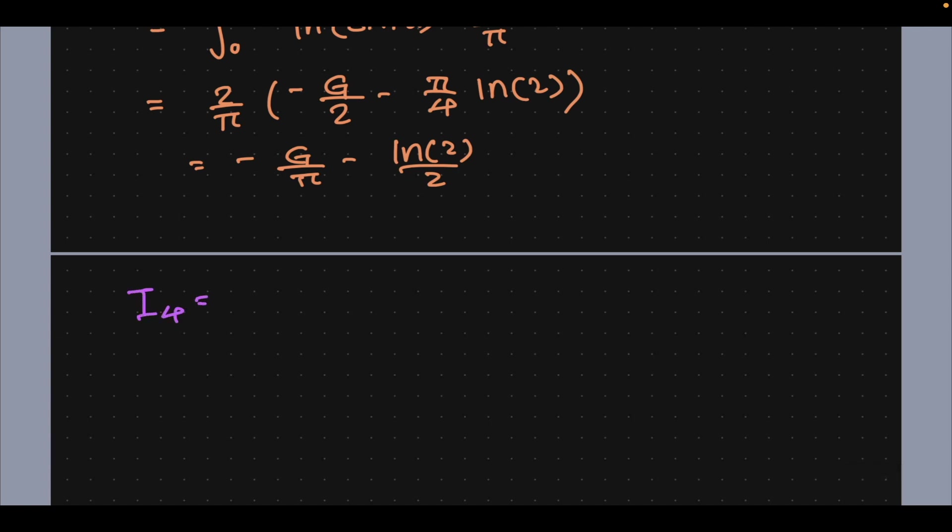So yeah, stuff that looks simple can turn out to be quite ugly, as I'm sure you've experienced in the past and also now. So I4: integral from 0 to 1/2 of natural log of gamma(1-z) dz.